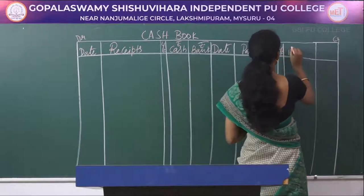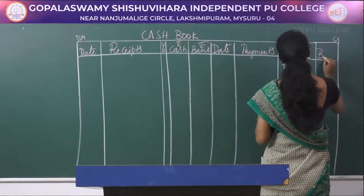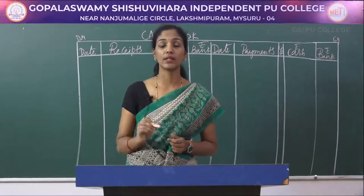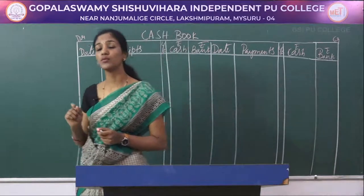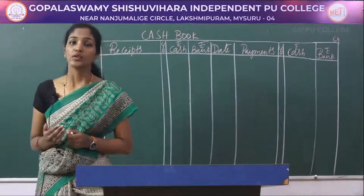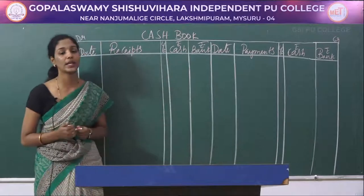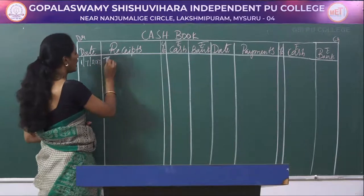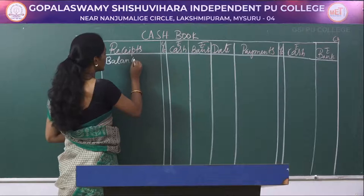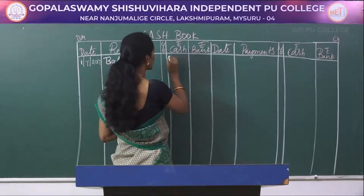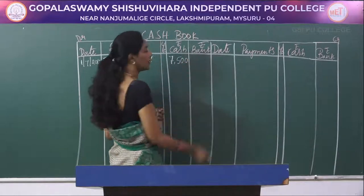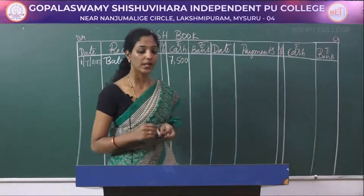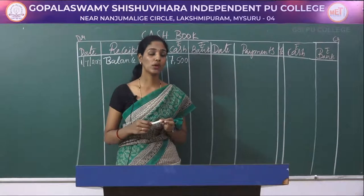The first transaction is 1/7/2017: cash in hand rupees 7500 and bank overdraft rupees 3500. Cash in hand is recorded on the debit side of the cash book. As on 1/7/2017, write 'balance brought down' and enter rupees 7500 in the cash column. Bank overdraft is considered a negative balance.